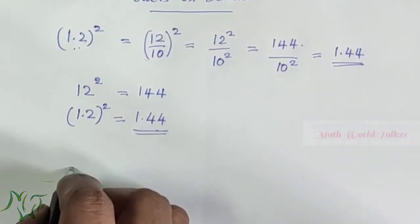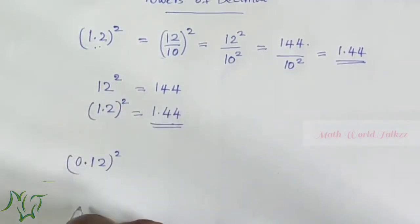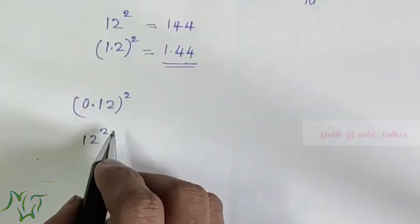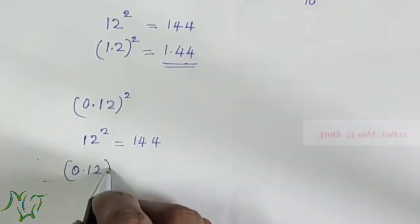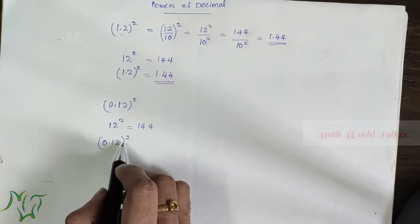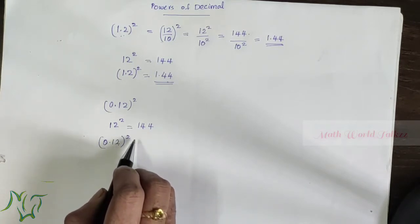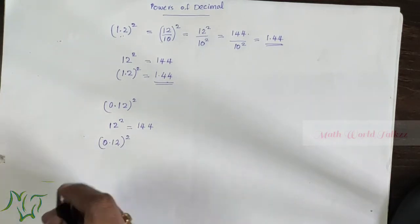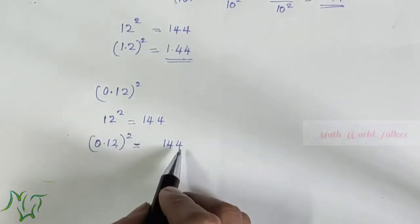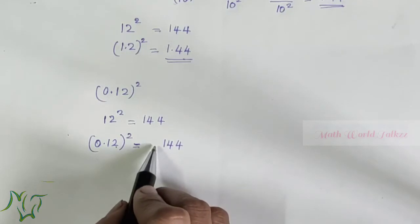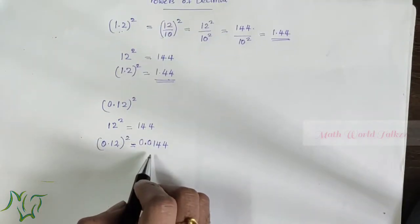What about 0.12 whole square? Without the decimal, the number is 12, and 12 squared is 144. Here in 0.12 we have two decimal places. When we square it, the decimal places in the answer should be two times two — that is four decimal places. So we write 144 and move the decimal four places to the left.